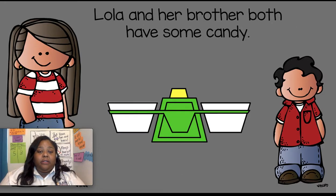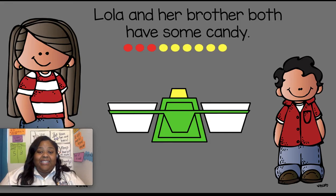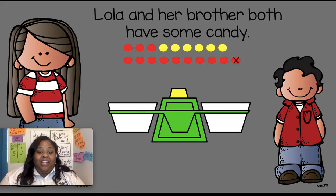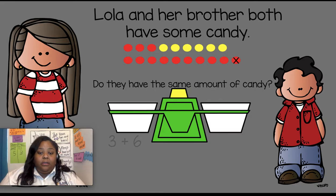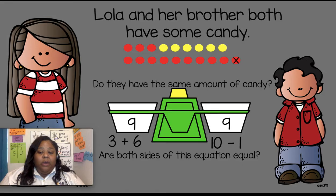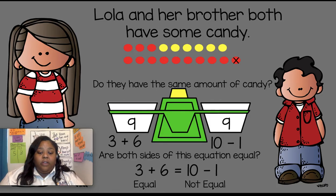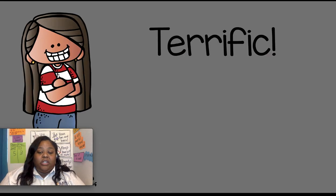Let's try another one. Remove your counters and erase your equation. Lola this time has three peppermints and six butterscotch candies, so three plus six. Lola's brother had 10 peppermints but he ate one, so 10 minus one. Three plus six is equal to nine, and 10 minus one is equal to nine. Both sides of the equation are equal — we have a nine on both sides. Three plus six equals 10 minus one.